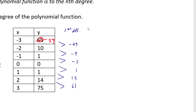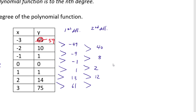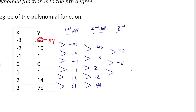Second differences give us: 40, 40, 2, 12, and 48 — not constant, so not a degree 2 polynomial. Moving to third differences: negative 32, negative 6, 10, and 36 — still not constant. Checking fourth differences as well, since this is definitely not a third degree polynomial.